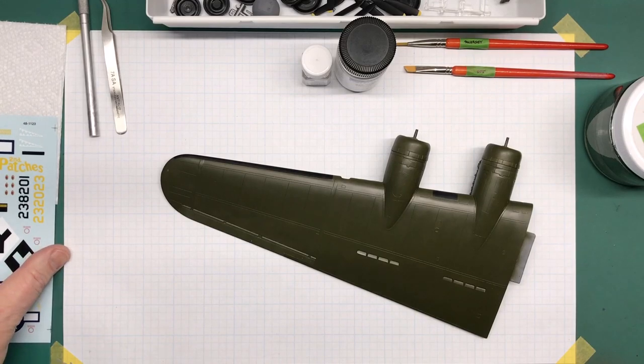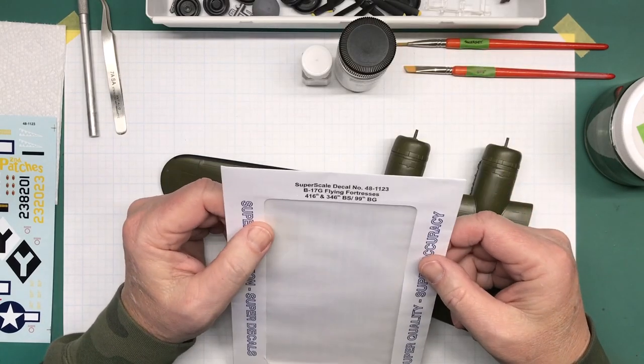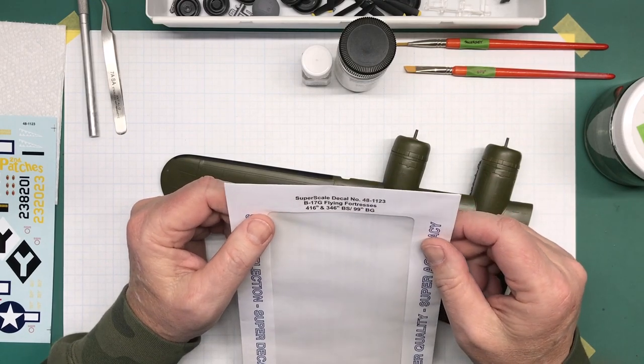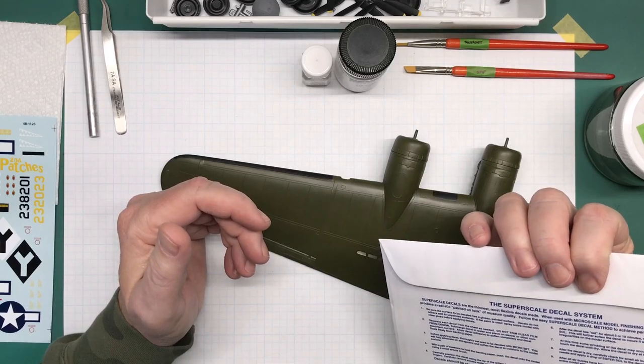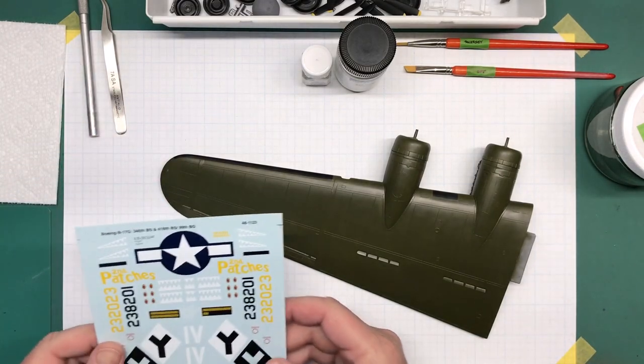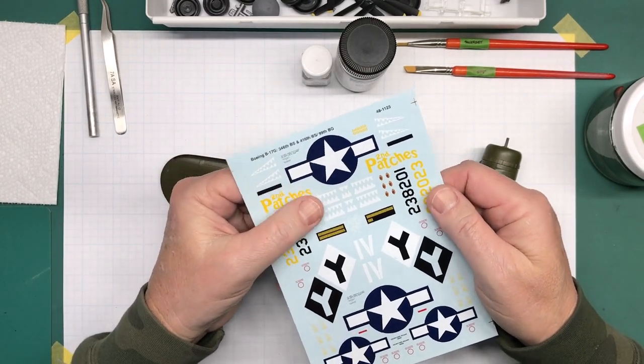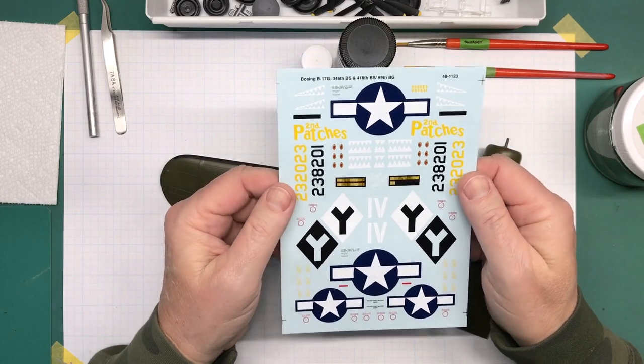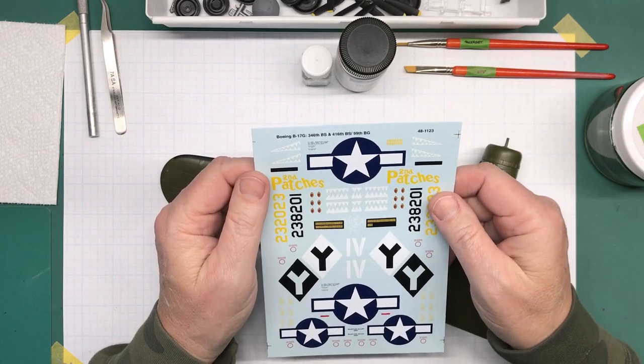So, let's talk a little bit about the decals. For this aircraft, I am using Superscale International Decals number 48-1123. B-17G Flying Fortresses 416th and 346th Bomber Squadron 99th Bomb Group. There is no date on this. These are made in the USA. And I have used this brand of decals in the past, and they are very good decals. They are very thin, minimal carrier film. And the printing is super crisp. Everything is in register. Just really good decals. I really like them.